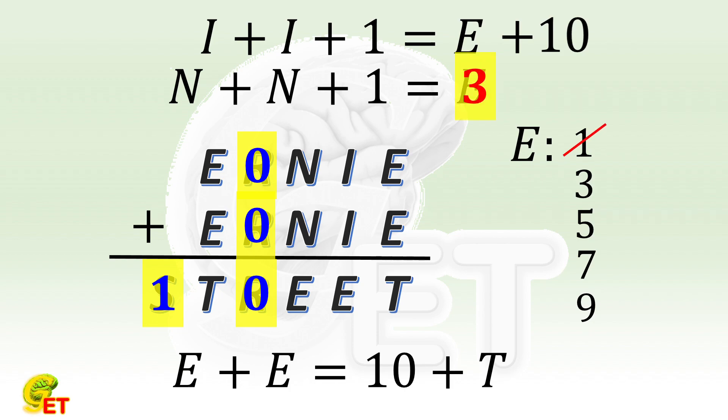If E is 3, N must be 1, the same as S. It doesn't work either. If E is 5, T must be 0, the same as R. It also doesn't work.